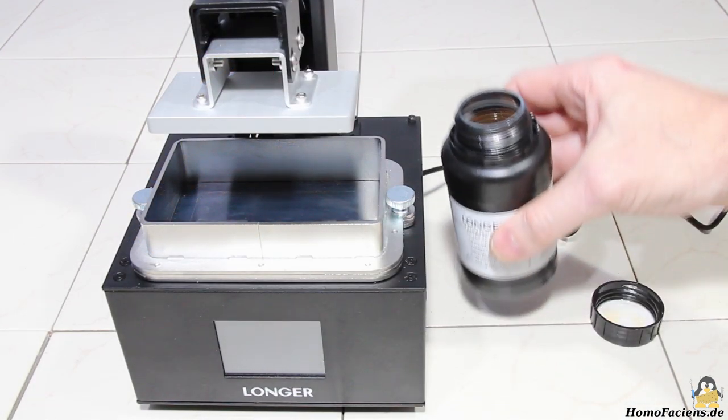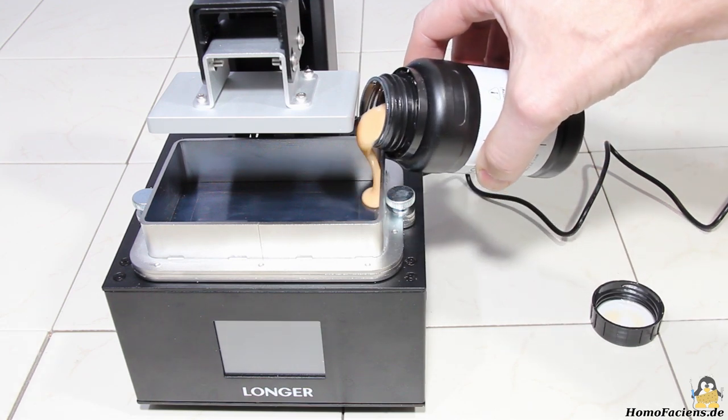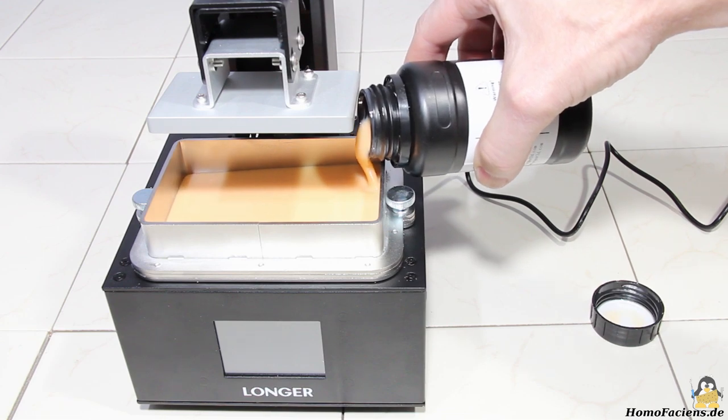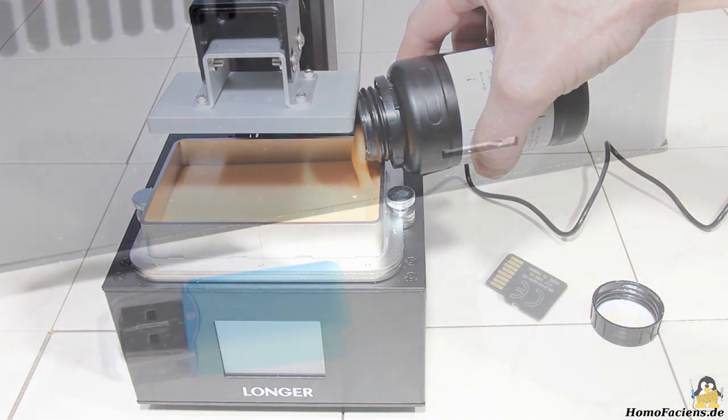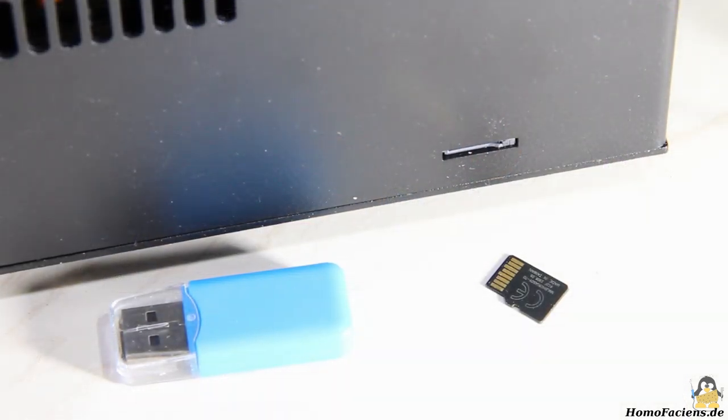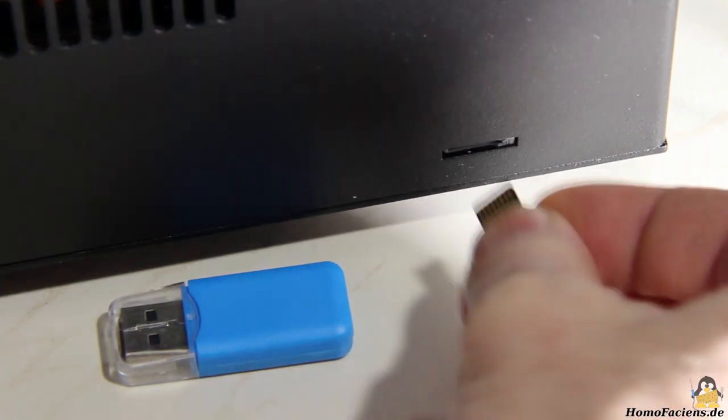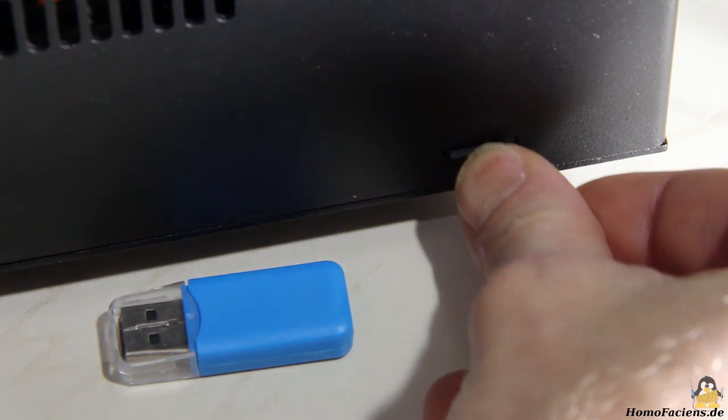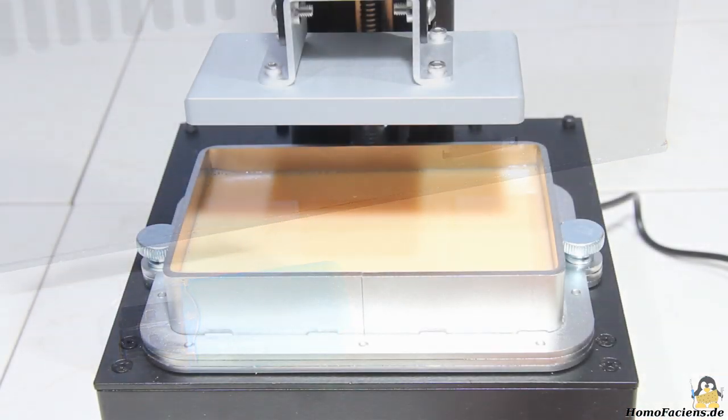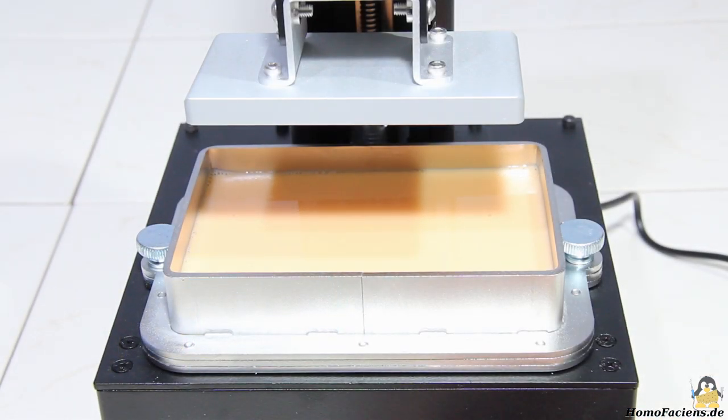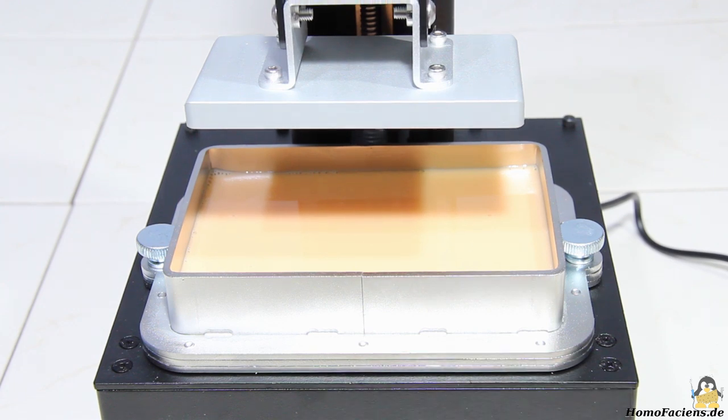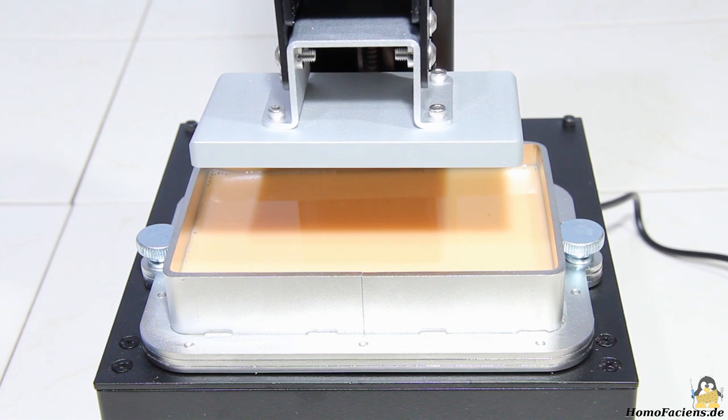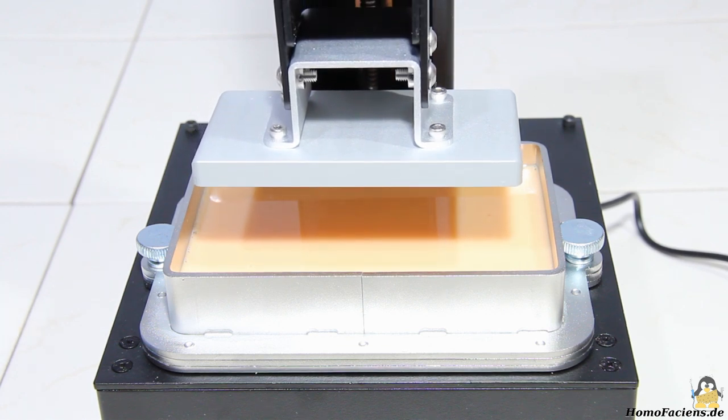Last thing to be done before the first print is filling resin into the vat. The Orange 10 ships with 250ml of amber colored resin. Print data is read from a microSD card, unfortunately in a non-open file specification. As a first test I use a sample file on the SD card named bracket, the scowling heads of the other files offered are not my cup of tea.